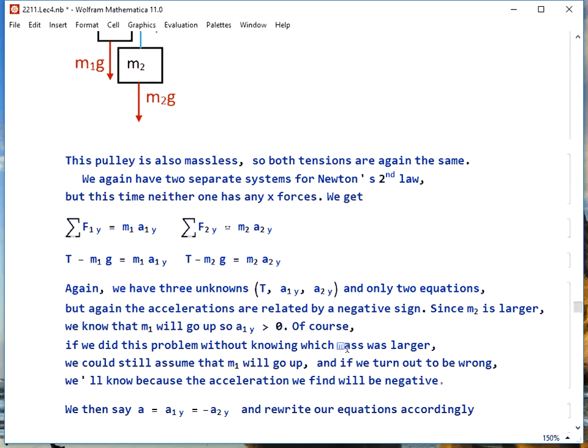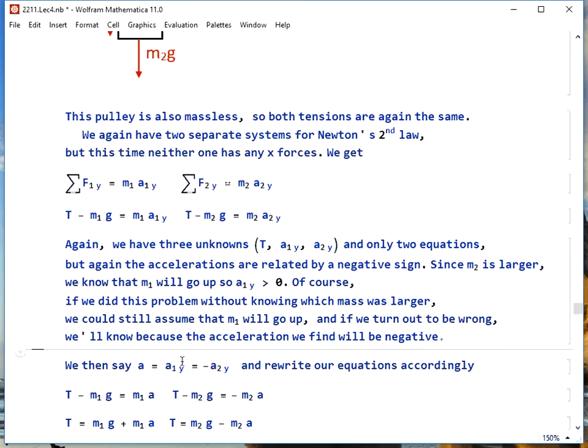You don't have to know how this is going to end before you do the problem, because if it turns out that I treated it this way, and this was just a big box full of empty air, and m2 was smaller than m1, what we would find is our acceleration would be negative when we were done. So we're going to say a equals a1y, and that means a2y is the negative of that. And we rewrite our equations like we did before.